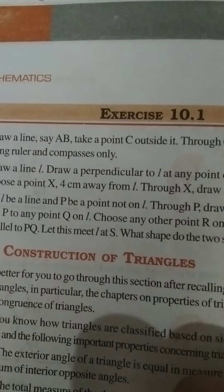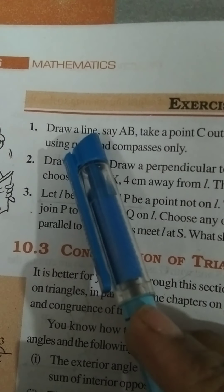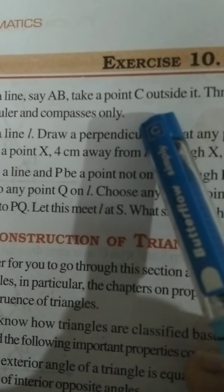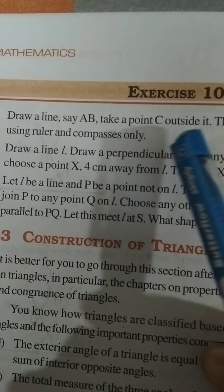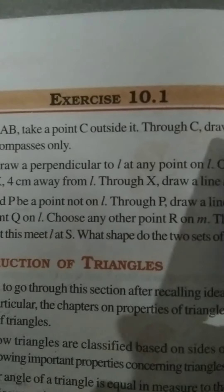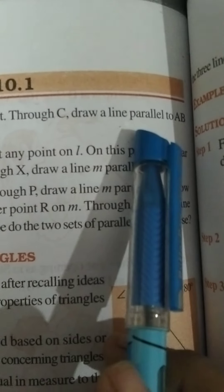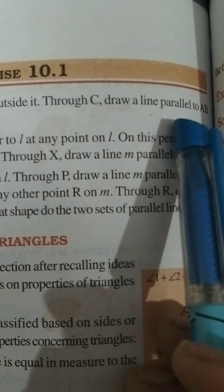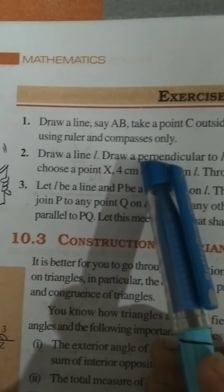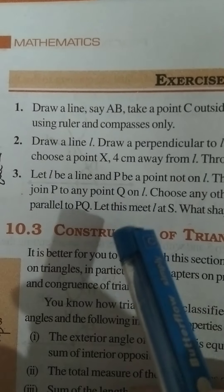In exercise 10.1, question number 1: draw a line and name it AB. Take a point C outside it. Draw a line from point C parallel to AB, using ruler and compass only. So you have to construct a line through C that is parallel to AB.